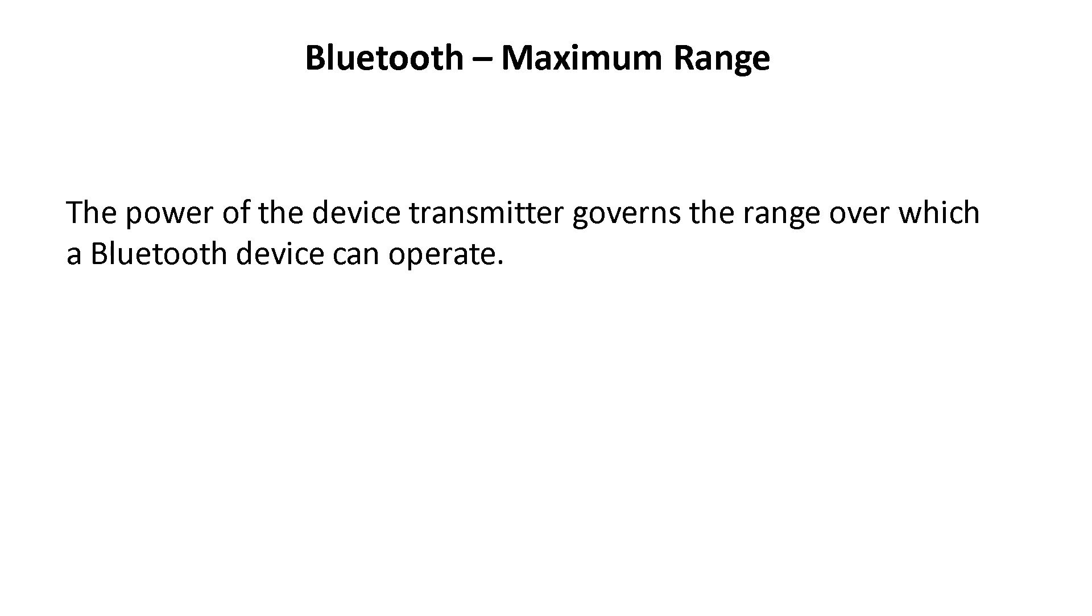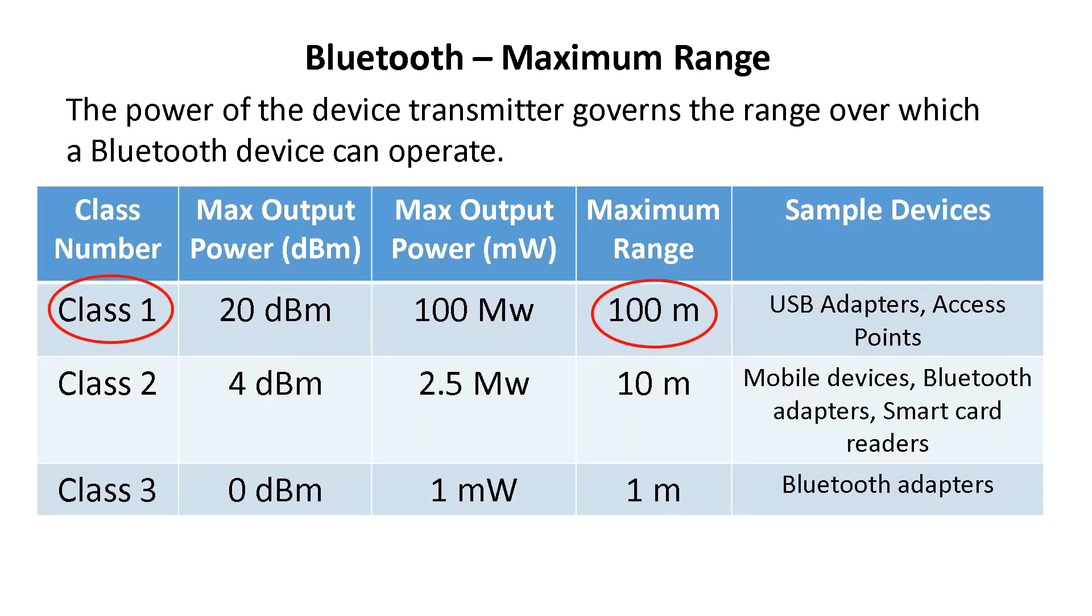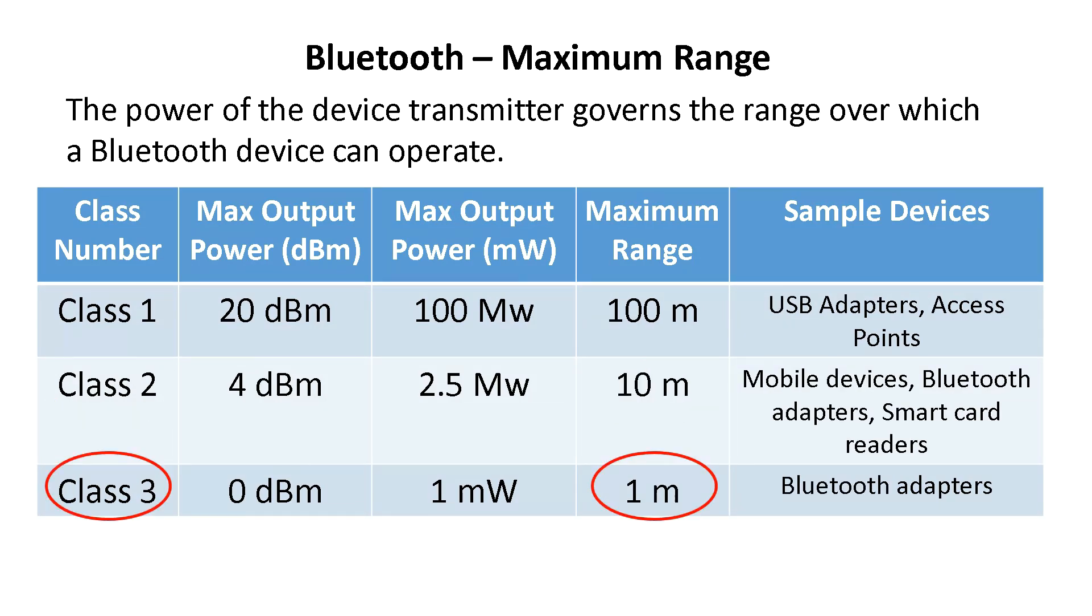Now Bluetooth devices fall under one of three classes. You have Class 1, and they are the most powerful and can operate up to 100 meters. Class 2, they are the most common kind and operate up to 10 meters. And finally Class 3, they are the least powerful and don't go much beyond 1 meter. There are devices that can vary their transmit power so they can operate at different classes.